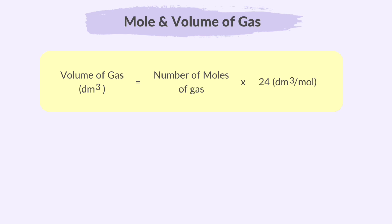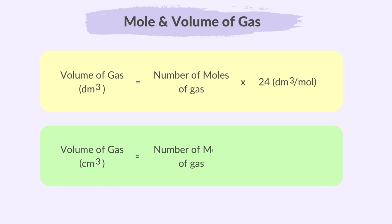Alternatively, if you want to find the volume of a gas in cubic centimetres, or if the molar gas volume has been given in cubic centimetres, then use this formula: volume of gas (in cm³) = number of moles of gas × 24,000 cm³.